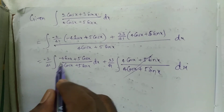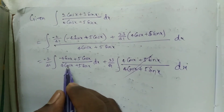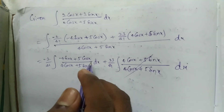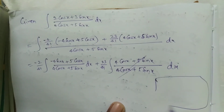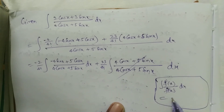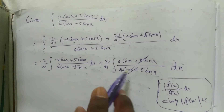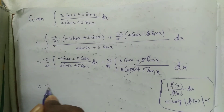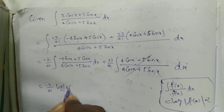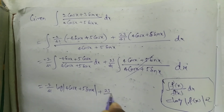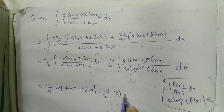Using the formula: integral of f'(x)/f(x) dx = log|f(x)| + C, and integral of 1 dx = x. The final answer is: (-2/41) log|4 cos x + 5 sin x| + (23/41)x + C.